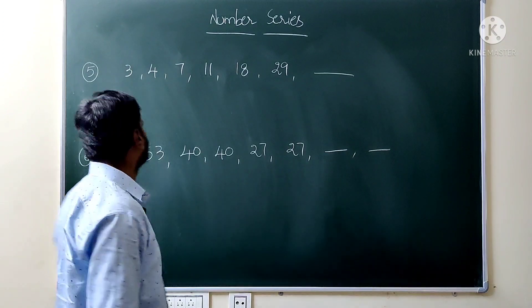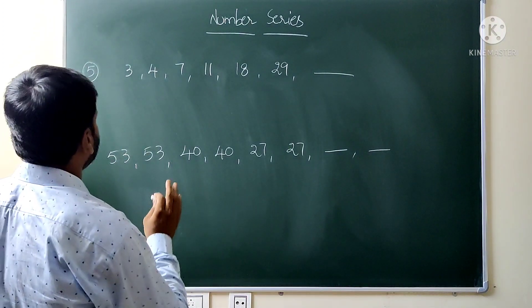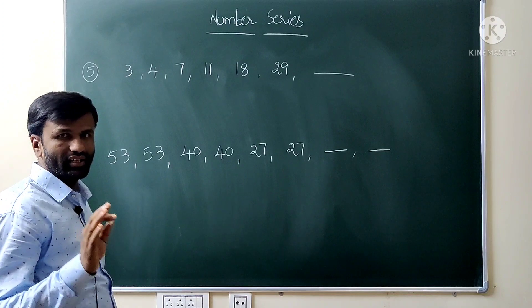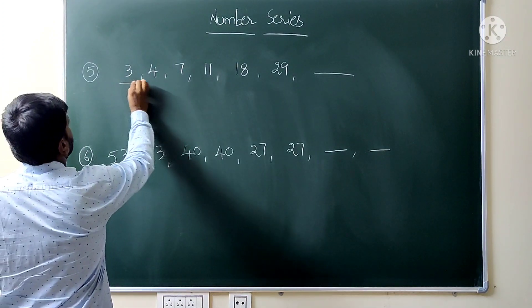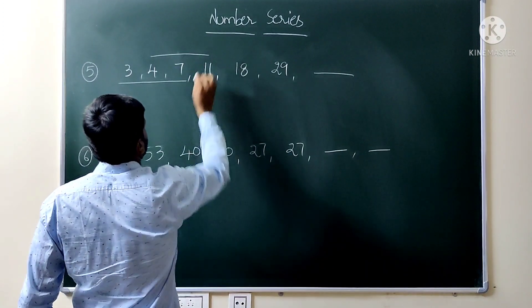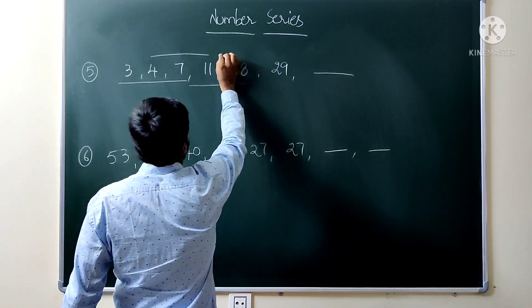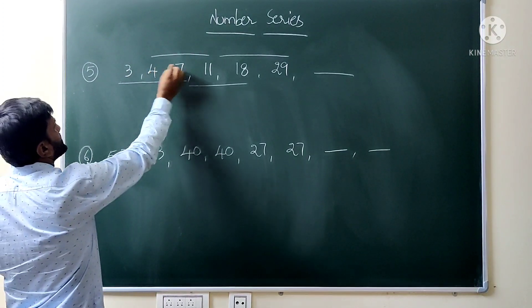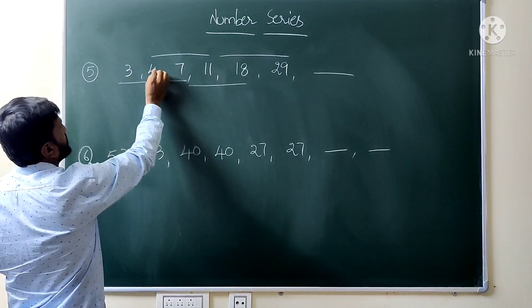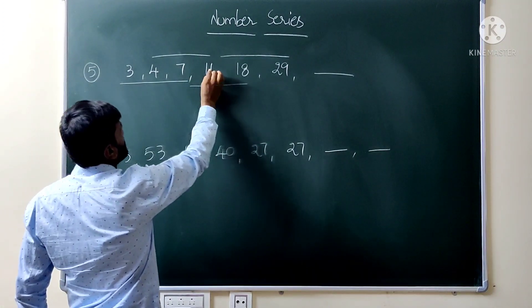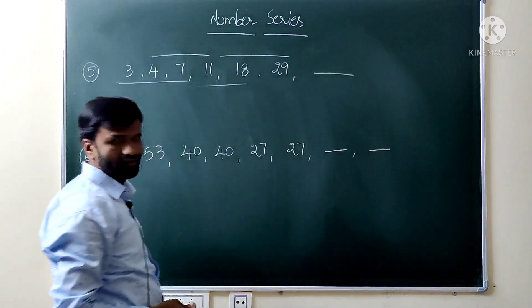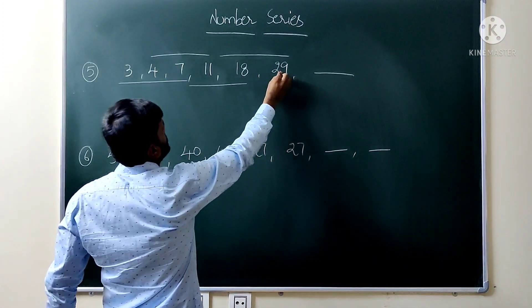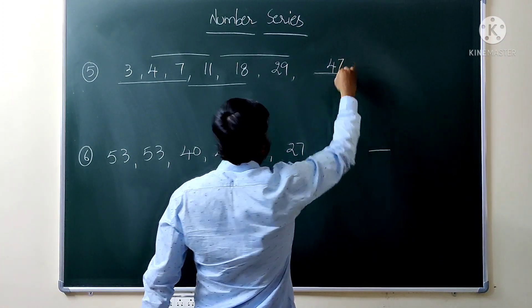Now the 5th question: 3, 4, 7, 11, 18, 29 — what is the next number? The pattern is: 3 plus 4 is 7, 4 plus 7 is 11, 7 plus 11 is 18, 11 plus 18 is 29. So the first two numbers sum to give the third, and the next two sum to give the following. Therefore, 18 plus 29 gives the answer as 47.